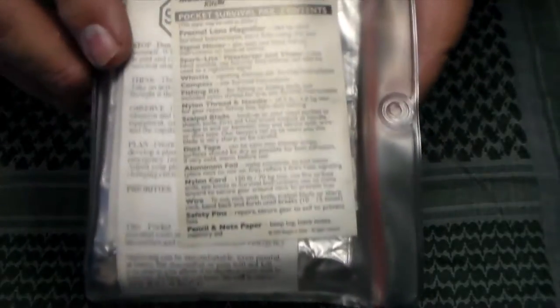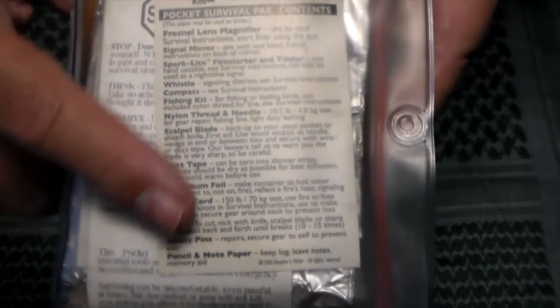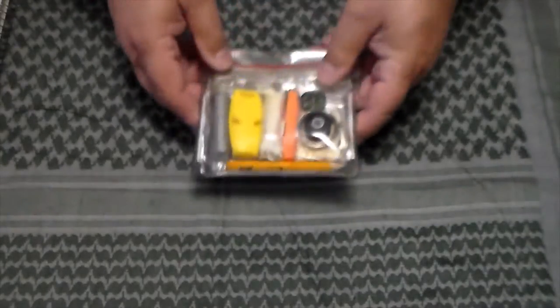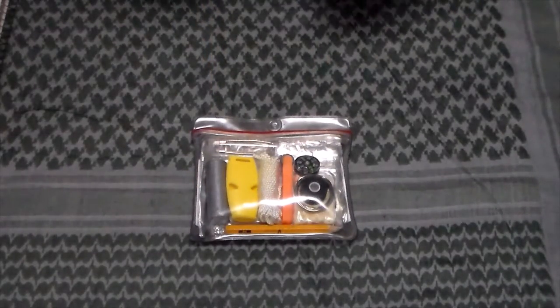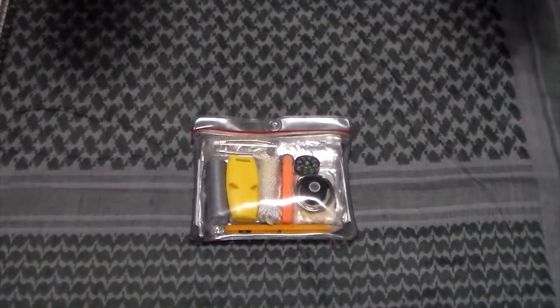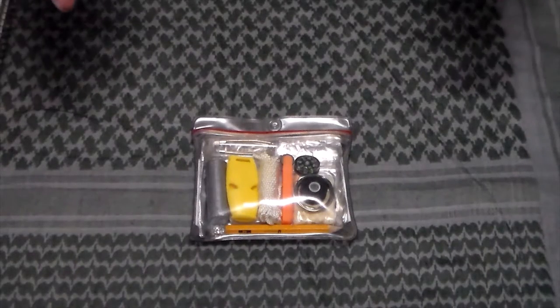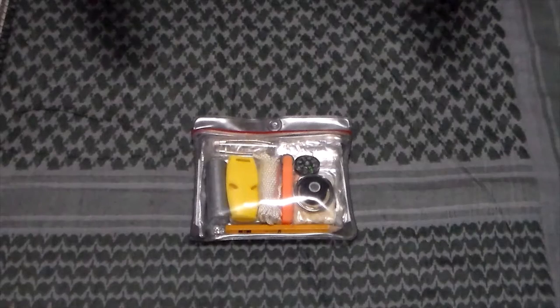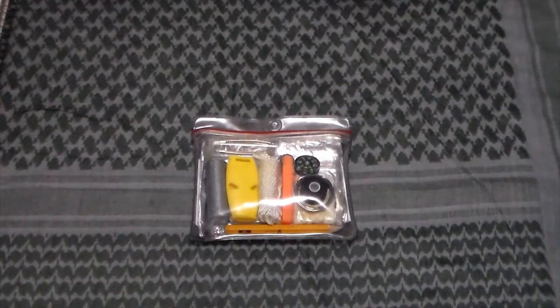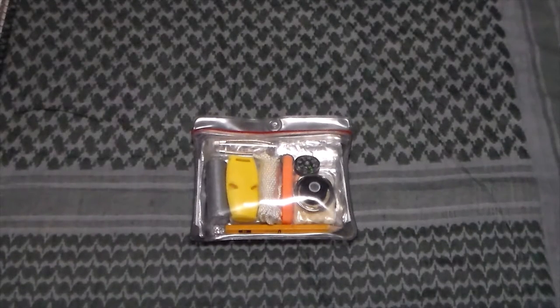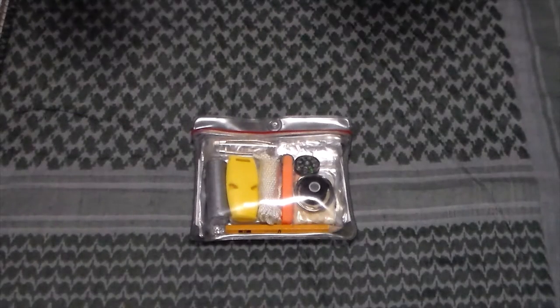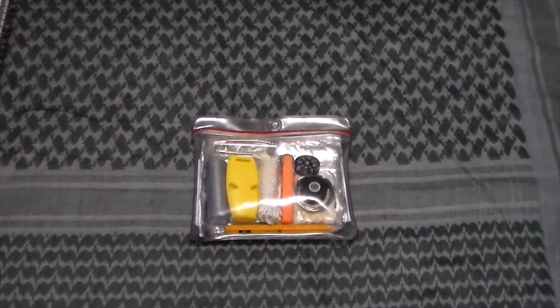And this right here is the contents that came in the kit. We'll be pulling that out in a minute. Doug Ritter, some people might also know, he is the founder of an organization called Knife Rights. It's basically the knife version of the NRA. And he does a lot of things at state level, getting knife laws changed and so on.